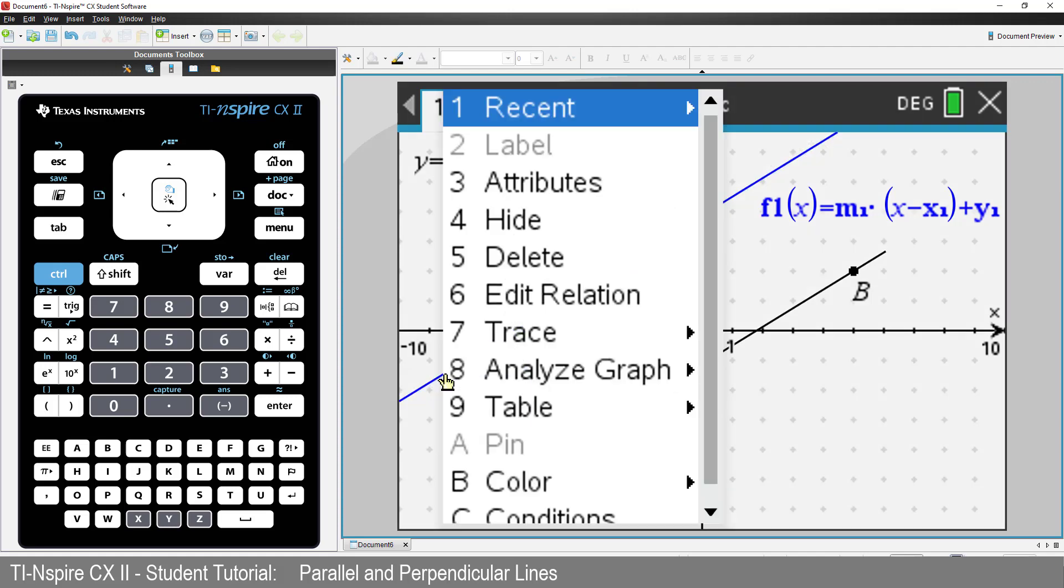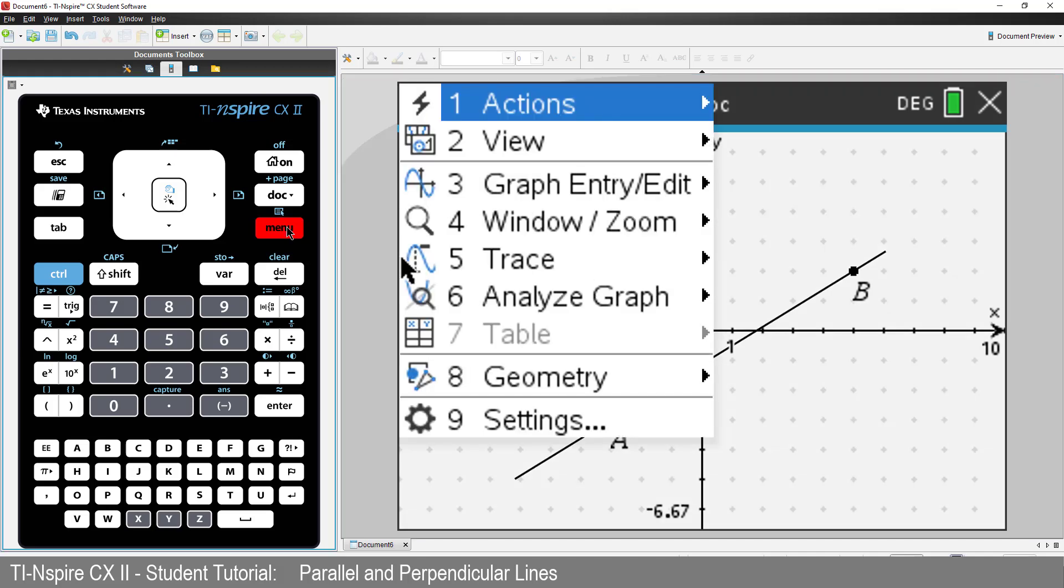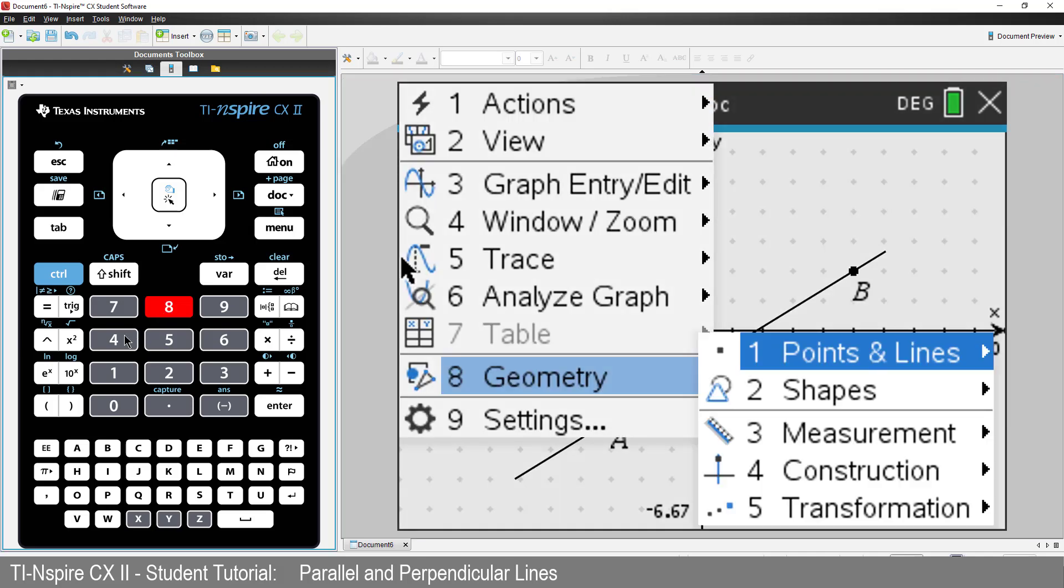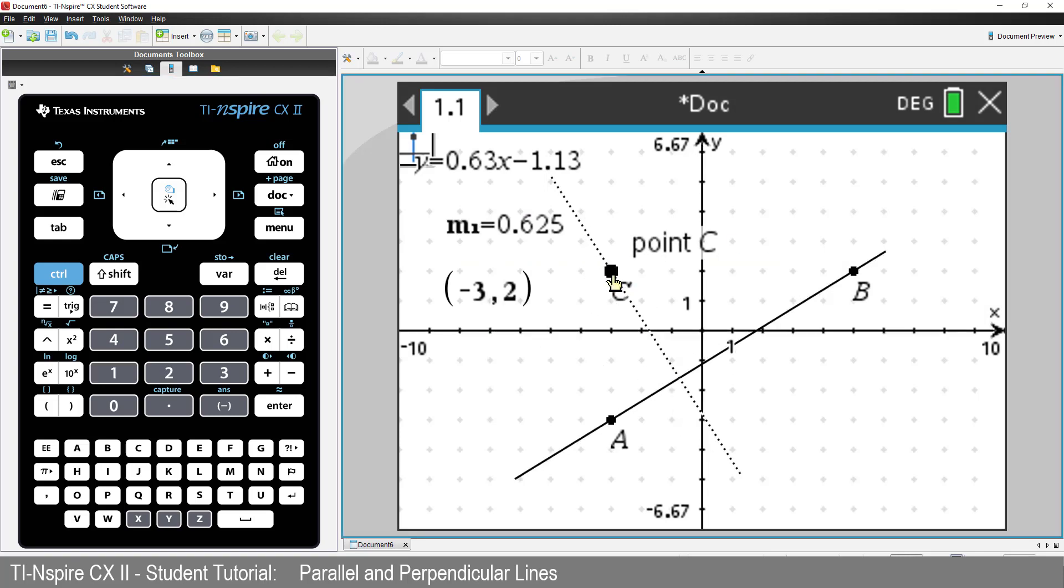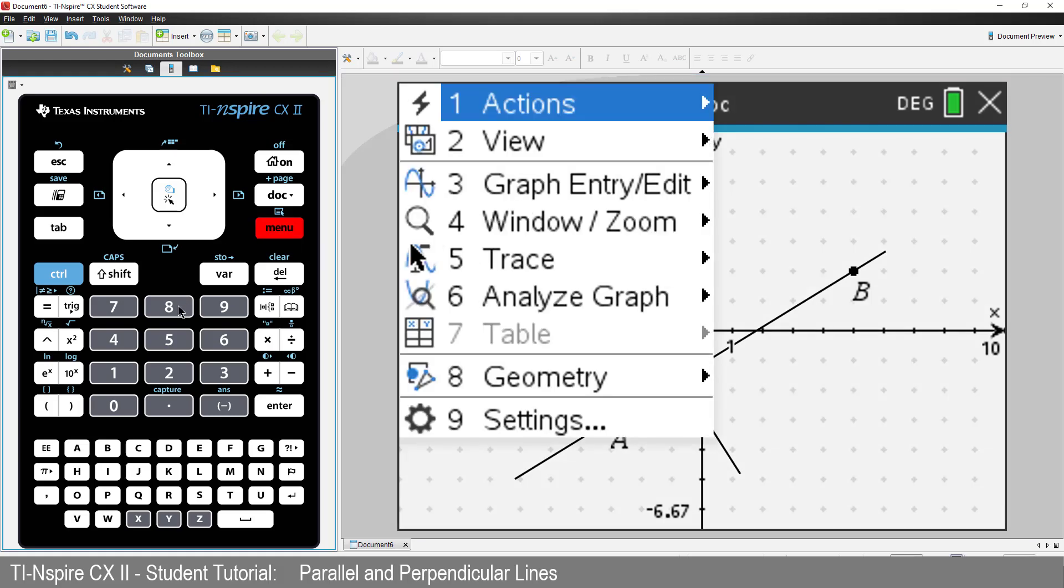First, I'll delete our parallel line. We can use the geometry tools to construct a line perpendicular to our original line, passing through point C. We'll measure the slope of our perpendicular line.